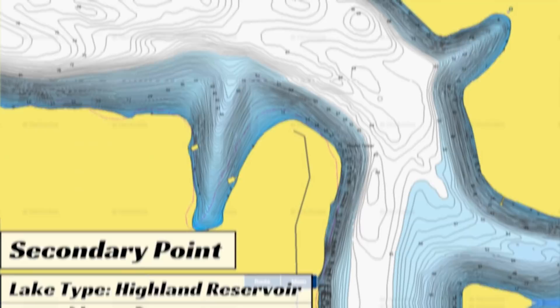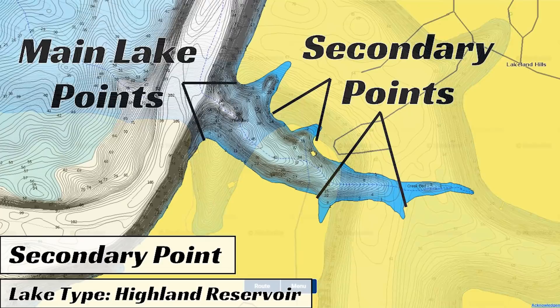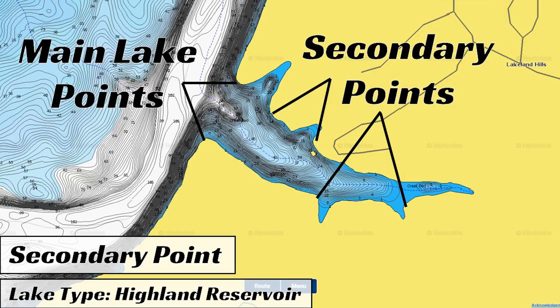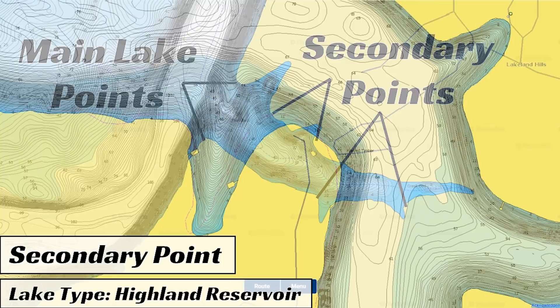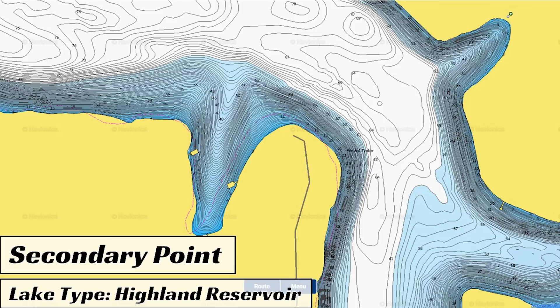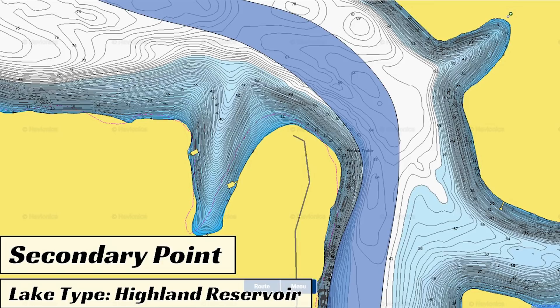The first type of area I target during the wintertime is a secondary point. Here's an example on a contour map. A secondary point is any point within a major creek on a highland or lowland reservoir. However, not all secondary points are created equally. In the wintertime, I look for secondary points that have a creek channel that swings close on one side and also have a flatter section up on top of the point on the opposite side of the creek channel.